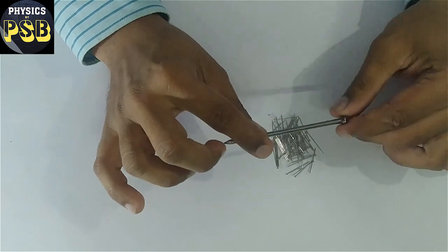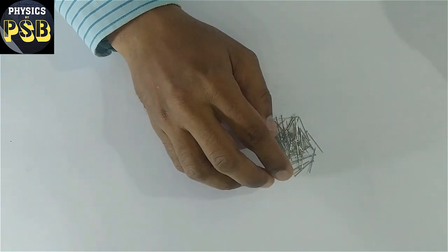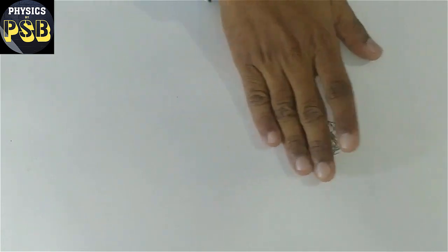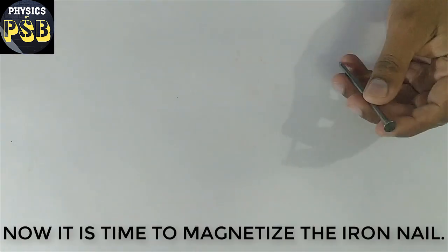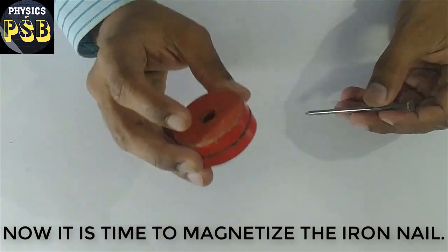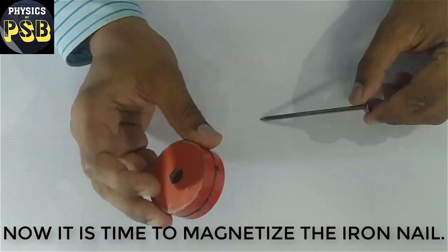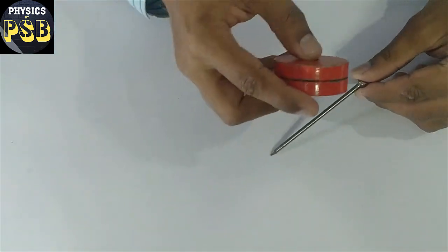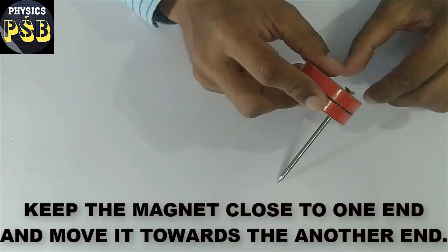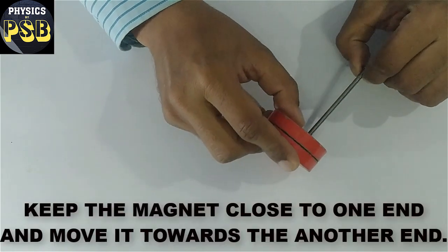Now I am going to magnetize this. Watch carefully what I do. I keep these things to one side. Now I take the magnet. I am going to keep it very close to this end, then I move towards the other end.